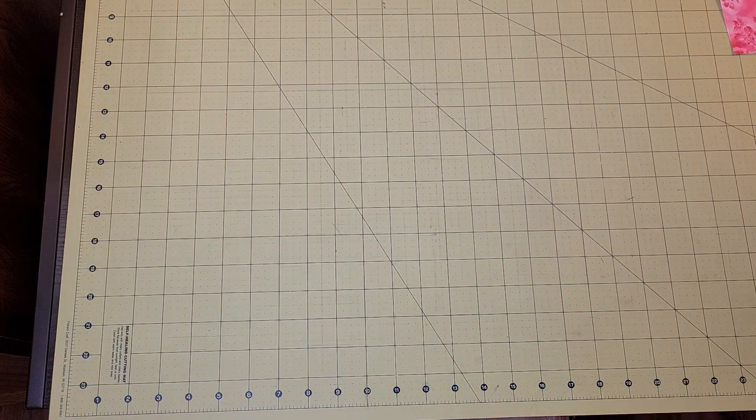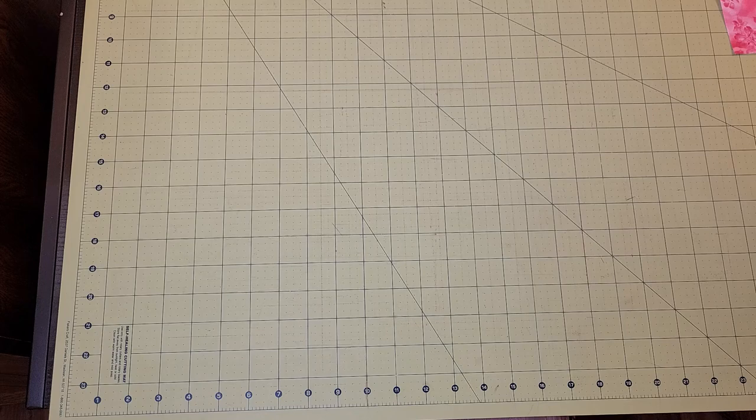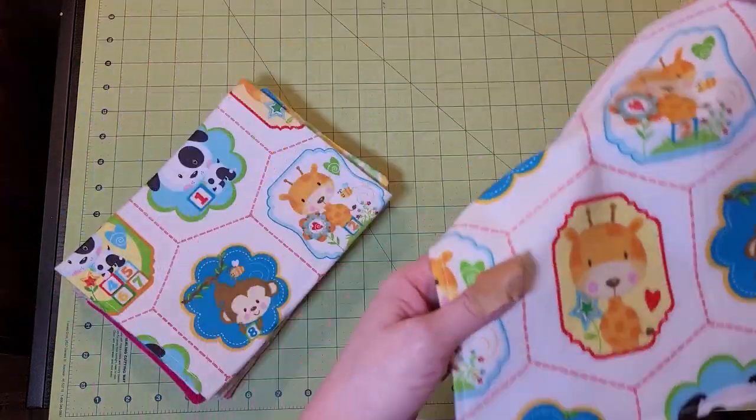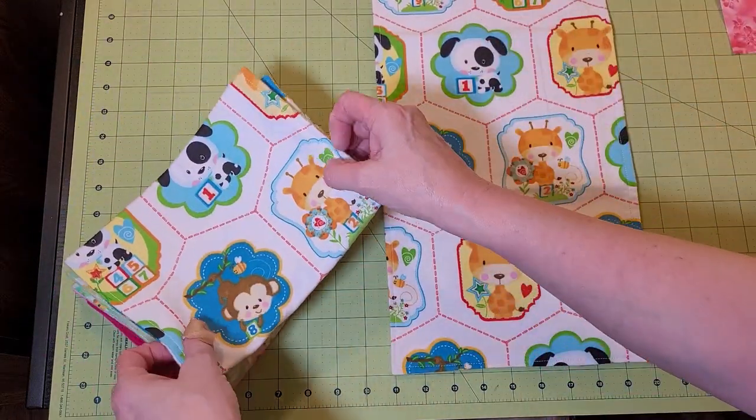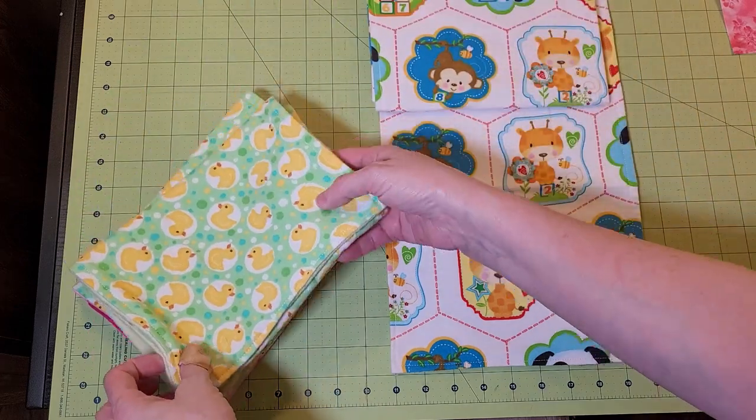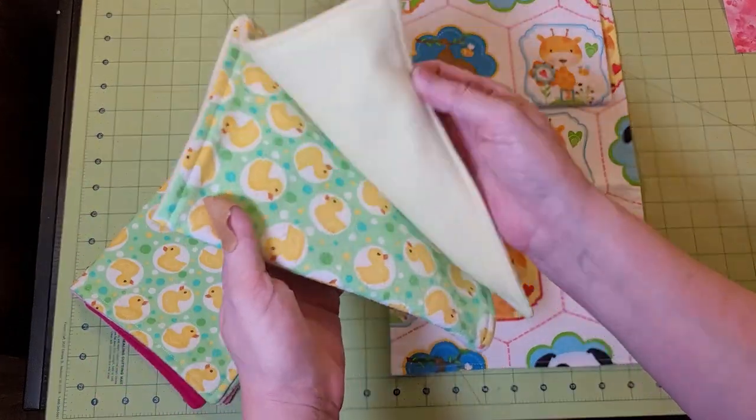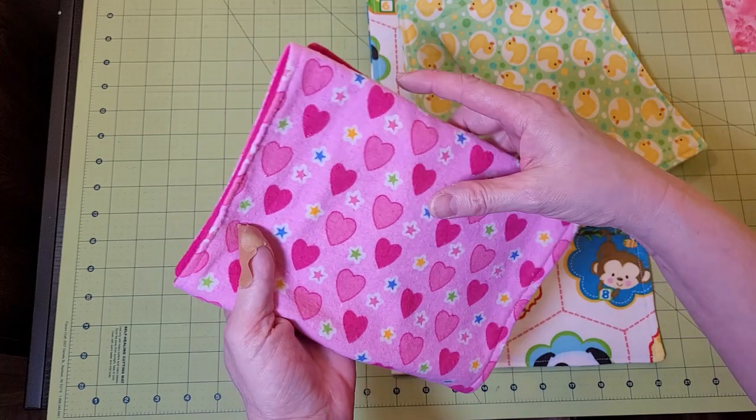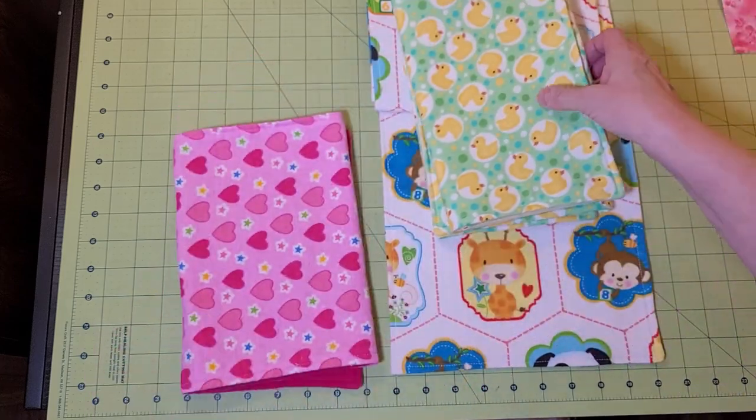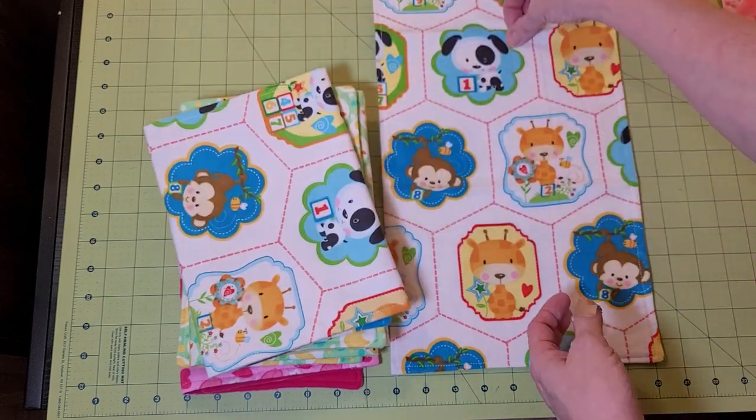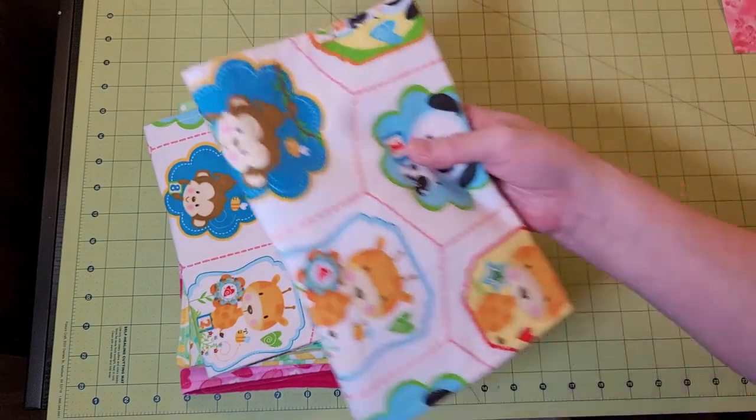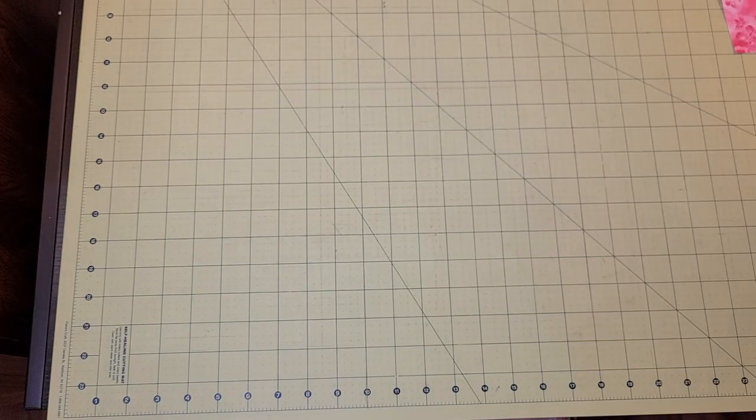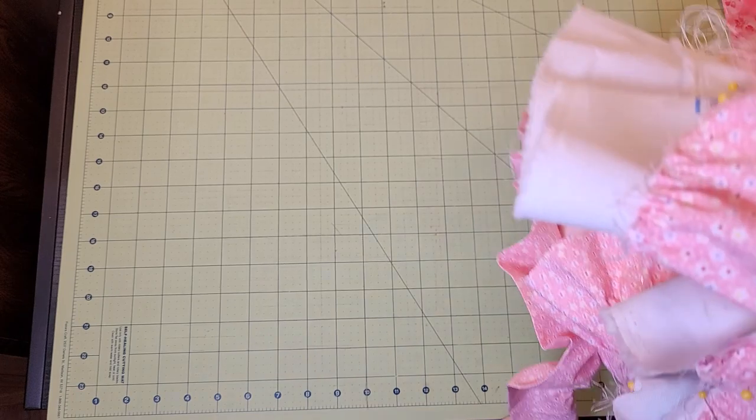If you were here last week, I had started making burp cloths for our new grandbaby, and I wanted to show you that I did finish those up. So we have these adorable little ones here, the ducks with the yellow fleece back, and I have two with the hearts and the pink fleece. So I was able to get those finished. And if you follow me on a regular basis, you know that I have been talking about a quilt that I am working on.